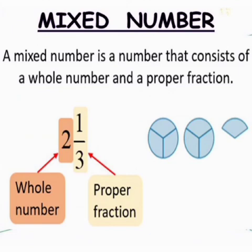Now, we can define Mixed Number. A mixed number is a number that consists of a whole number and a proper fraction. For example, 2, 1 upon 3, here 2 is a whole number and 1 upon 3 is a proper fraction.